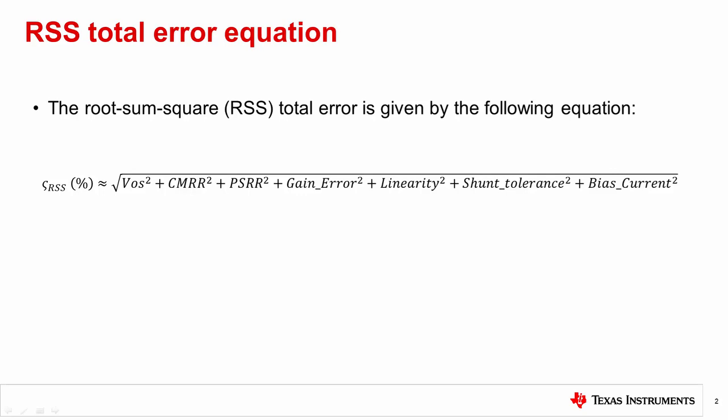In previous videos we introduced the root sum of squares, or RSS, the total error equation for current sense amplifier circuits, as shown here. Note that not all error terms may be shown. The rest of this video focuses on shunt tolerance, which is the only error term that has nothing to do with the current sense amplifier itself, but is a key contributor to the system error.